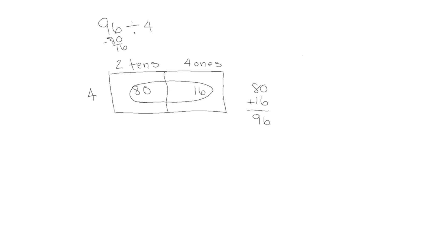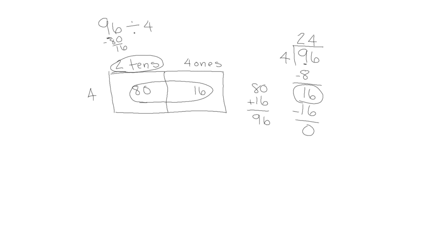Now let's see how this looks as a long division problem. We have 96 divided by 4. Our thinking is very similar: we have 9 tens and 4 groups, and we can put 2 tens in each group, using 8 tens. We have 1 ten left plus the 6 ones, giving us 16 ones. We know if we have 4 groups, we can put 4 ones in each group — 4 times 4 is 16 — and when we subtract, there's no remainder. We get a quotient of 24, which is 2 tens plus 4 ones. So 96 divided by 4 equals 24.